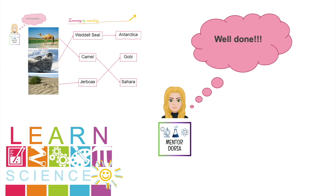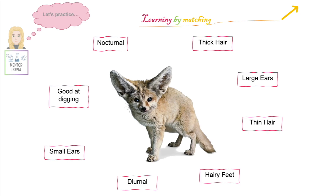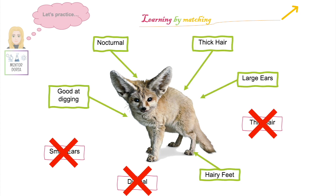Here we have another learning by matching activity. In the middle of the slide you will see a picture of a fennec fox. Around the fennec fox are different labels with different adaptations the fennec fox may or may not have to live in the desert. Feel free to pause the video now so you can have a go at deciding which adaptations this fennec fox has. The correct answers are highlighted here in green. Fennec foxes are nocturnal, meaning they are active during the night. They have thick hair which keeps them warm during the cold night and protects them from the hot sun during the day. They also have hairy feet and large ears, which help keep them cool. And they are also good at digging, which is important as fennec foxes live in underground dens.